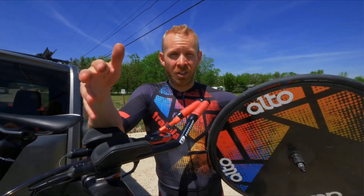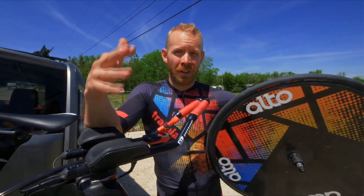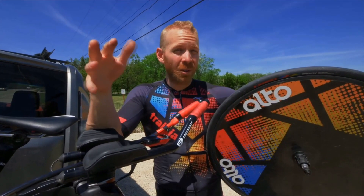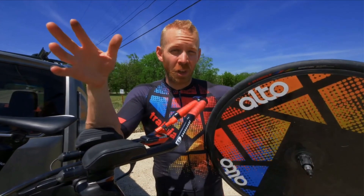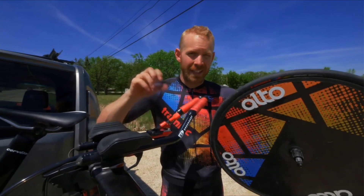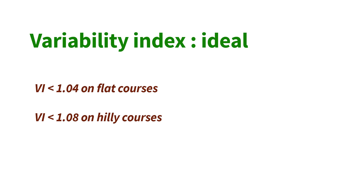Returning to triathlon or TT rides, you really want your Variability Index to be under 1.1, and ideally under 1.04 on flat courses — that can be an objective. On a hilly course or under special circumstances you might go a bit higher. The upper threshold would be around 1.08.